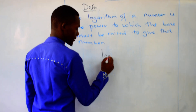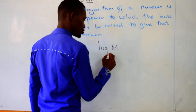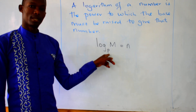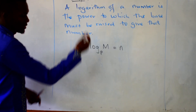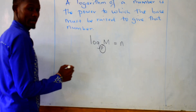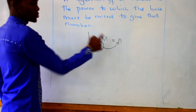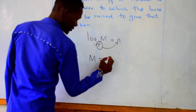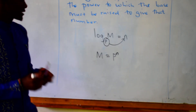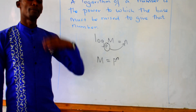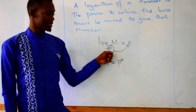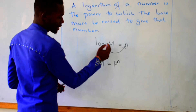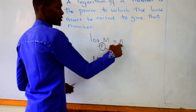So if we write log of a number, let's say M to base P, and we say it equals to N — where P is the base and N is the result — we are saying that P must be raised to the power N for you to get the number M. In short, M is the same as P raised to the power N. So if we are finding the logarithm of any number, we are finding the power to which the base must be raised to get that given number.